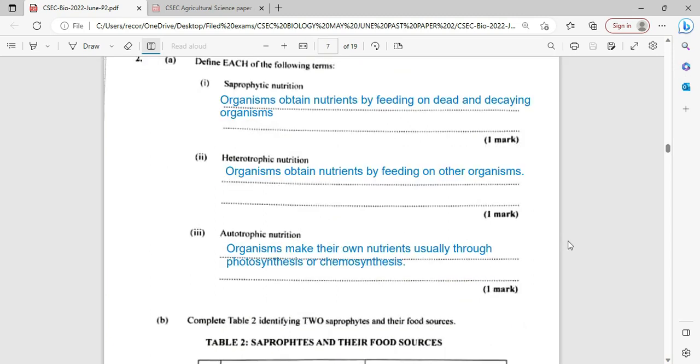Define each of the following terms. Saprophytic nutrition. Now, saprophytes are organisms that feed on dead and decaying organisms. So they obtain their food from organisms that are usually dead or decaying. Example of saprophytes: There are two groups of saprophytes. So we're going to have our detritivores and decomposers.